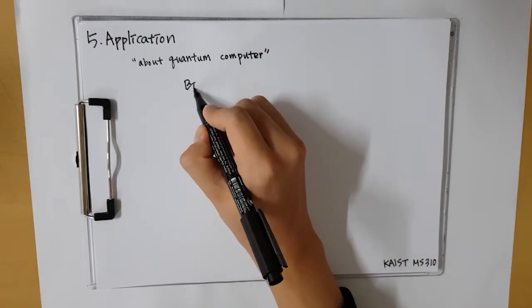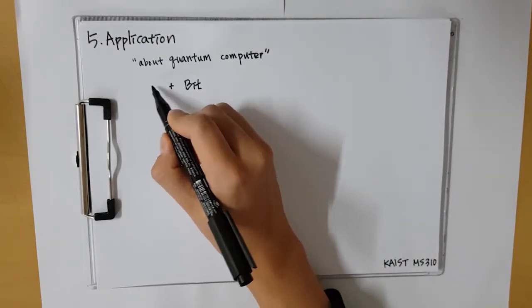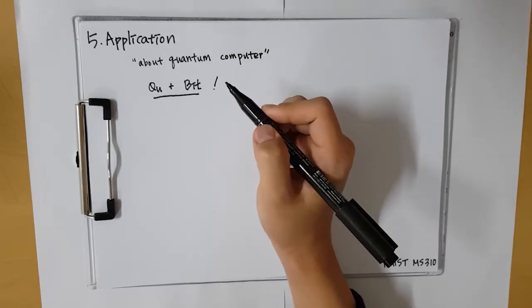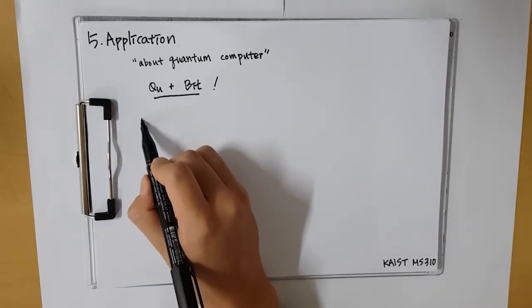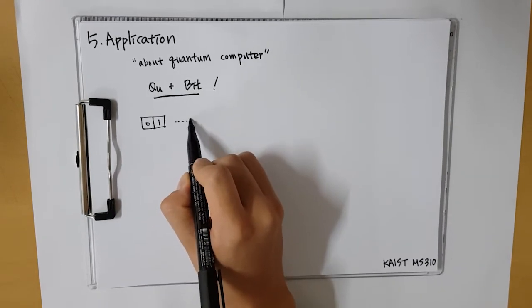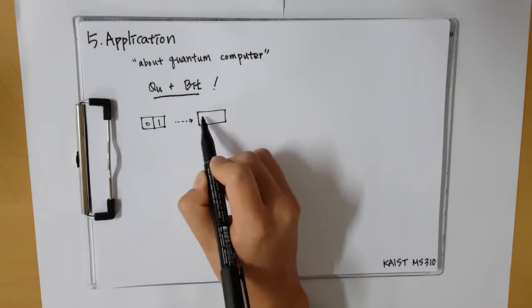Computer use qubit instead of bit. A classical computer processes and stores information in bits of 0 and 1, while a quantum computer processes and stores information in qubits of 0 and 1 states by form of superposition. For the operation of qubit, quantum entanglement and superposition are needed.